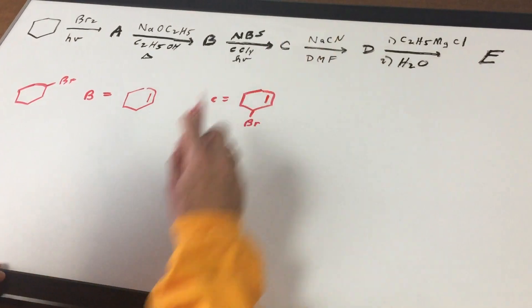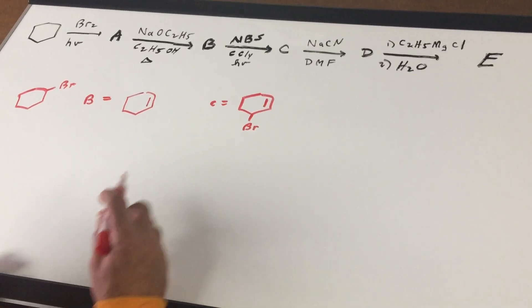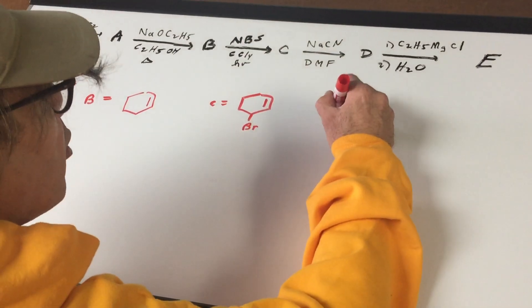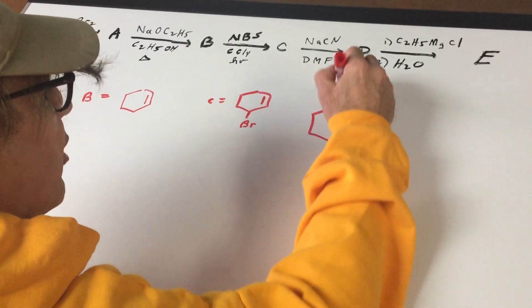In the next step, NaCN with DMF. This is a slam dunk. The minute you see you've got a great nucleophile, you automatically say to yourself, this is going to be an SN2 reaction.